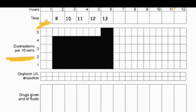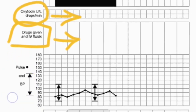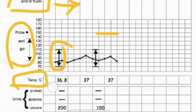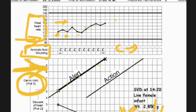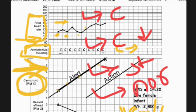Contraction is checked per 10 minutes; if contraction is not enough, oxytocin is provided as recommended by the doctor. Other drugs given during labor are also noted. Pulse, BP, and temperature (per 2 hours) are marked on the partograph. Urine volume is observed regularly. Benefits of the partograph: C-section rates have been reduced, child mortality and morbidity rates have decreased, it is useful for study purposes, and the normal delivery rate has increased.